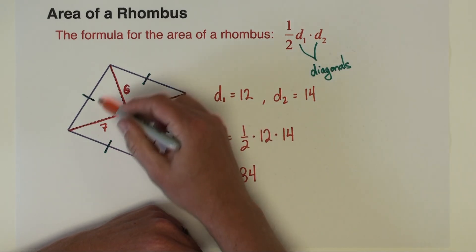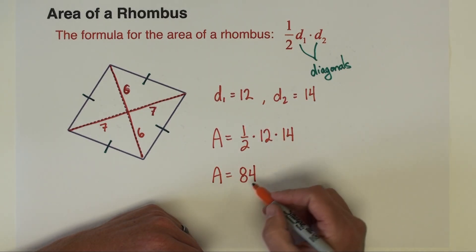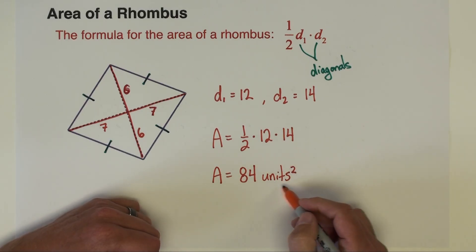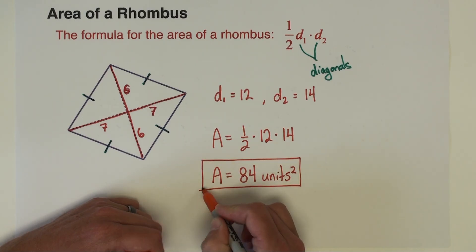And since I didn't put units here, you can leave the units off or you can just simply write units squared. Might be the safer thing to do to list units squared on that area.